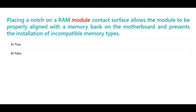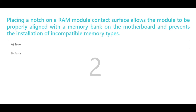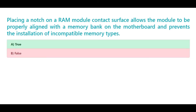Placing a notch on a RAM module contact surface allows the module to be properly aligned with a memory bank on the motherboard and prevents the installation of incompatible memory types. A. True. B. False. The correct answer is A. True.